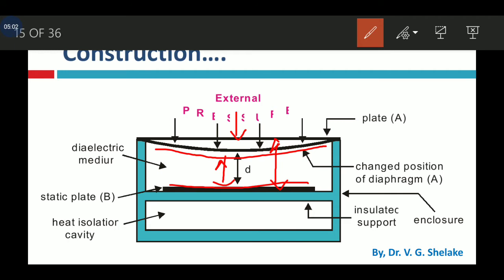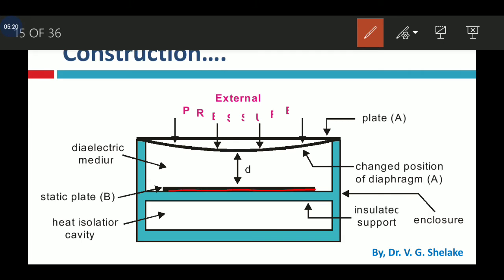The total assembly is enclosed in an insulating enclosure made of plastic or ceramic, with insulated support for the static plate. When plate A changes its position, the capacitance value changes. There is a heat isolation cavity because changes in temperature may also affect the capacitance value. External pressure is converted into an equivalent voltage. It is a passive transducer because storing charges requires an external battery or supply.